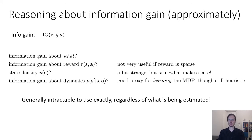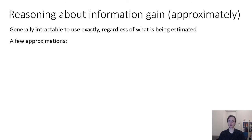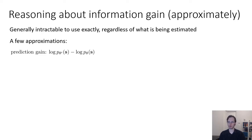Generally, it's intractable to use information gain exactly, regardless of which variable you're estimating, if you have a large state space or action space. So if we want to use information gain for exploration, we have to make some kind of approximation. A lot of the technical complexity in using these methods is really in the nature of approximation that you're going to make. One approximation we could make is something called prediction gain. Prediction gain is not the same as information gain, but it can be shown to be a crude approximation to information gain.